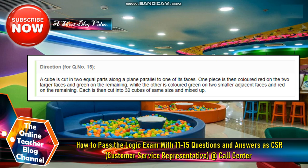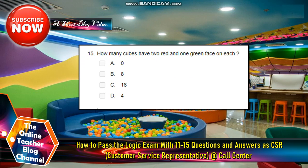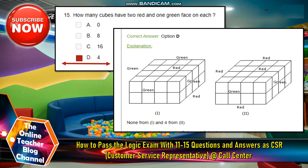For question number 15: A cube is cut in two equal parts along a plane parallel to one of its faces. One piece is then colored red on the two larger faces and green on the remaining, while the other is colored green on two smaller adjacent faces and red on the remaining. Each is then cut into 32 cubes of the same size and mixed up. Number 15: How many cubes have two red and one green face on each? A, 0; B, 8; C, 16; and D, 4. So the answer is letter D, 4. The explanation is: in box 1, there are four green and two red. And in number 2, the boxes are four red and two green. None from one and four from two.